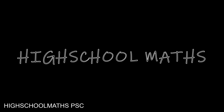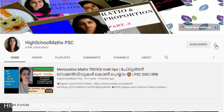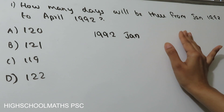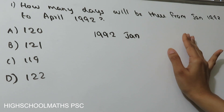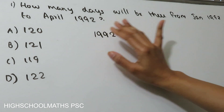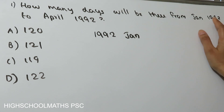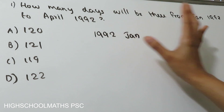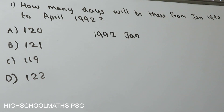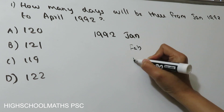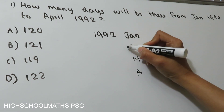Now let's take a look at the class. Question 1: How many days will there be from January 1992 to April 1992? The months we count are January, February, March, and April.